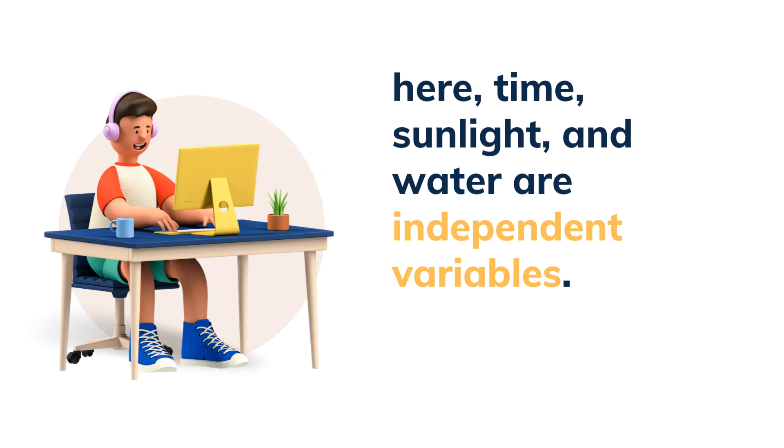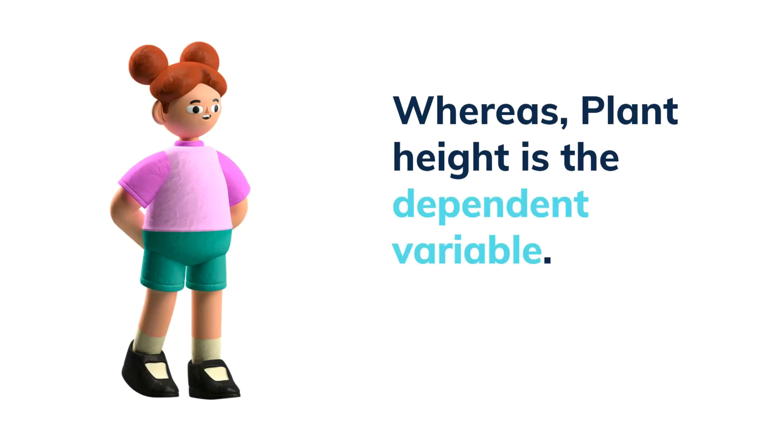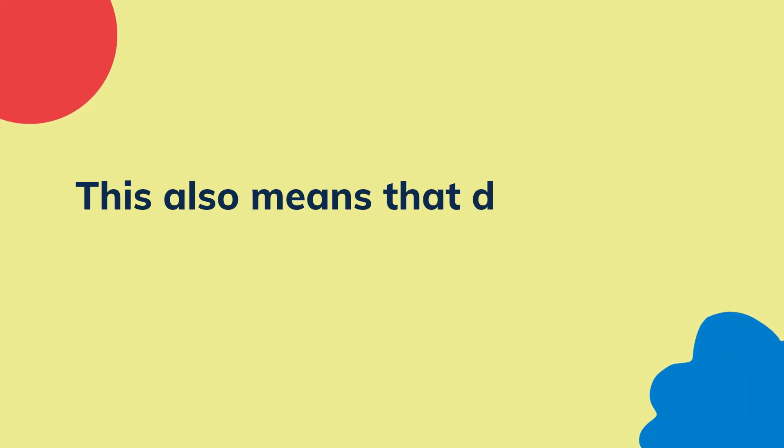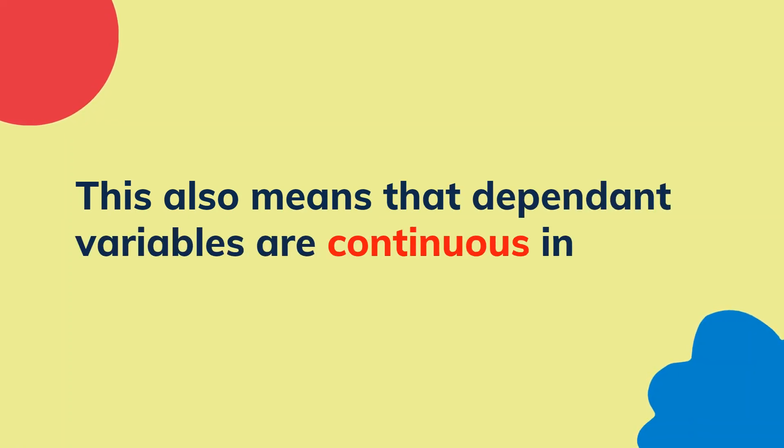Here plant height is the dependent variable because it depends upon water, sunlight, and the time it takes to grow. This also means that the dependent variables are continuous in nature, or in simple words, it must be a numeric value.